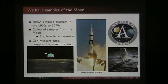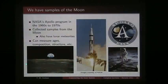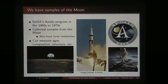We also have samples of the moon — we sent the Apollo missions in the 1960s and 1970s and collected samples of lunar rocks. We also have lunar meteorites that were ejected by impacts and fell to Earth, collected in Antarctica and other places. We can look at their compositions and their radiometric ages to come up with an idea of when these rocks formed and infer the composition and structure of the moon.